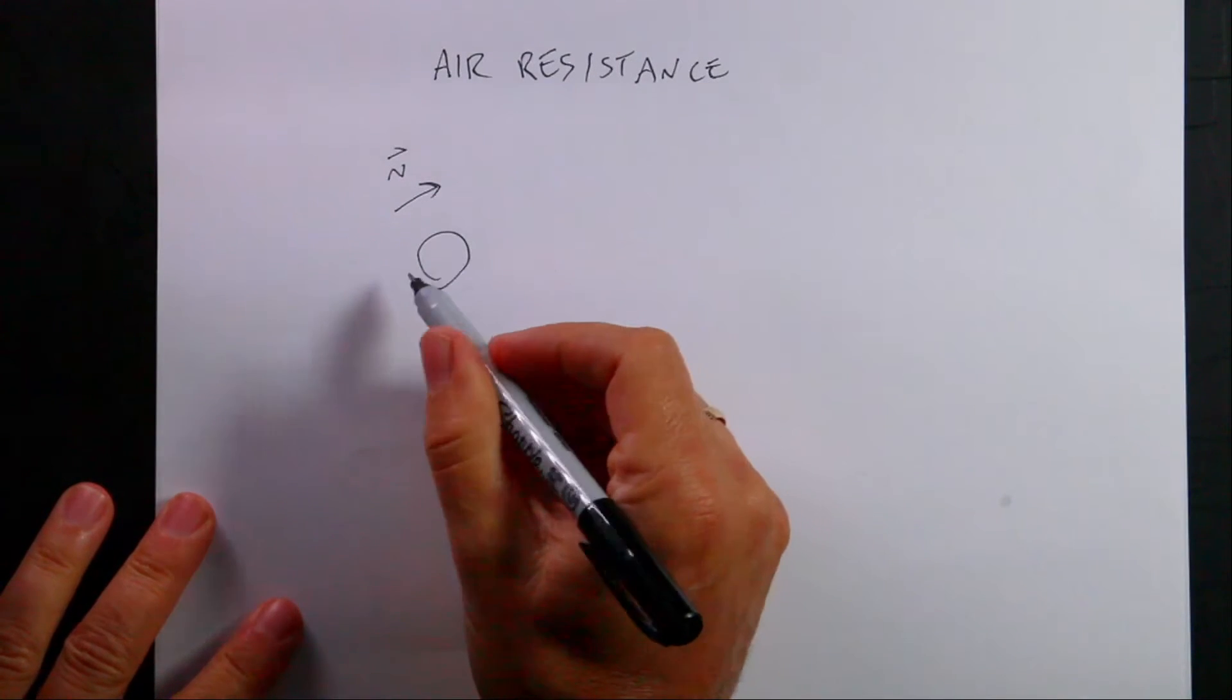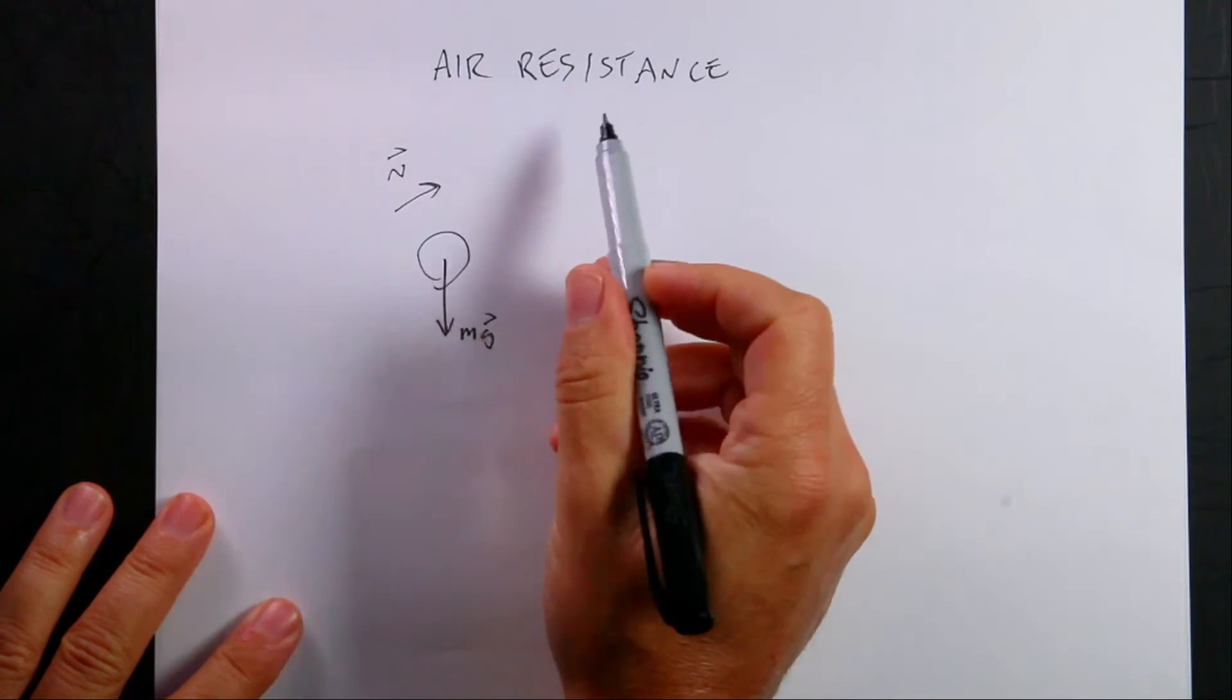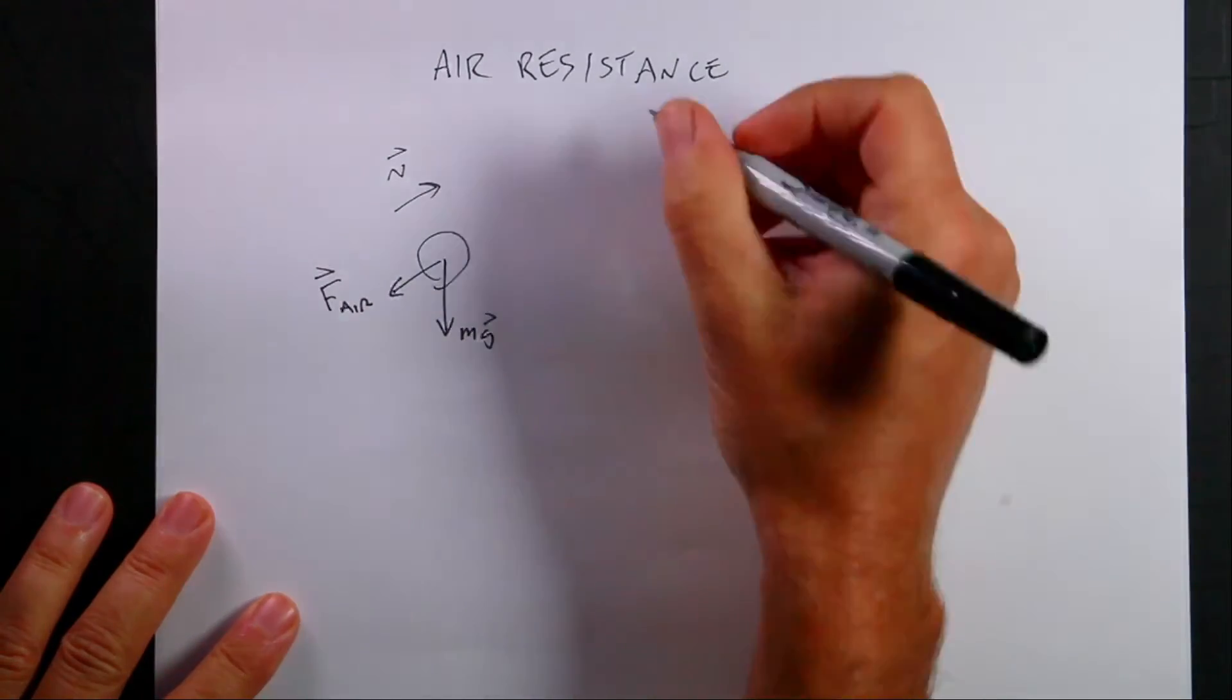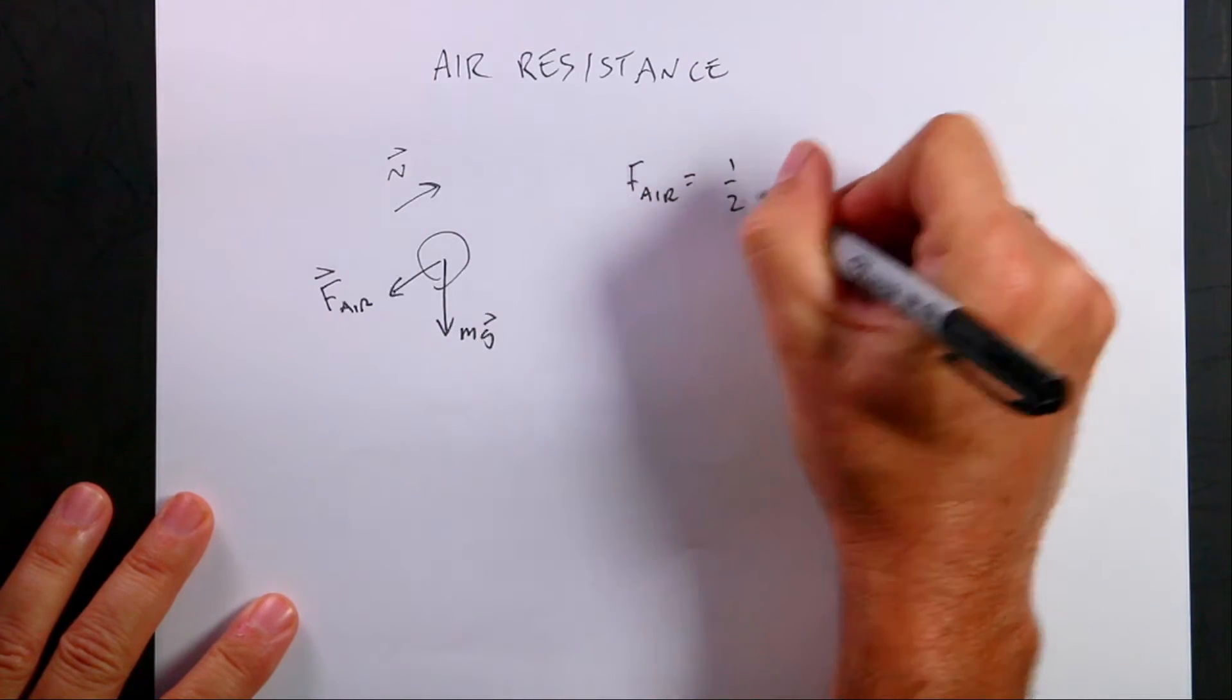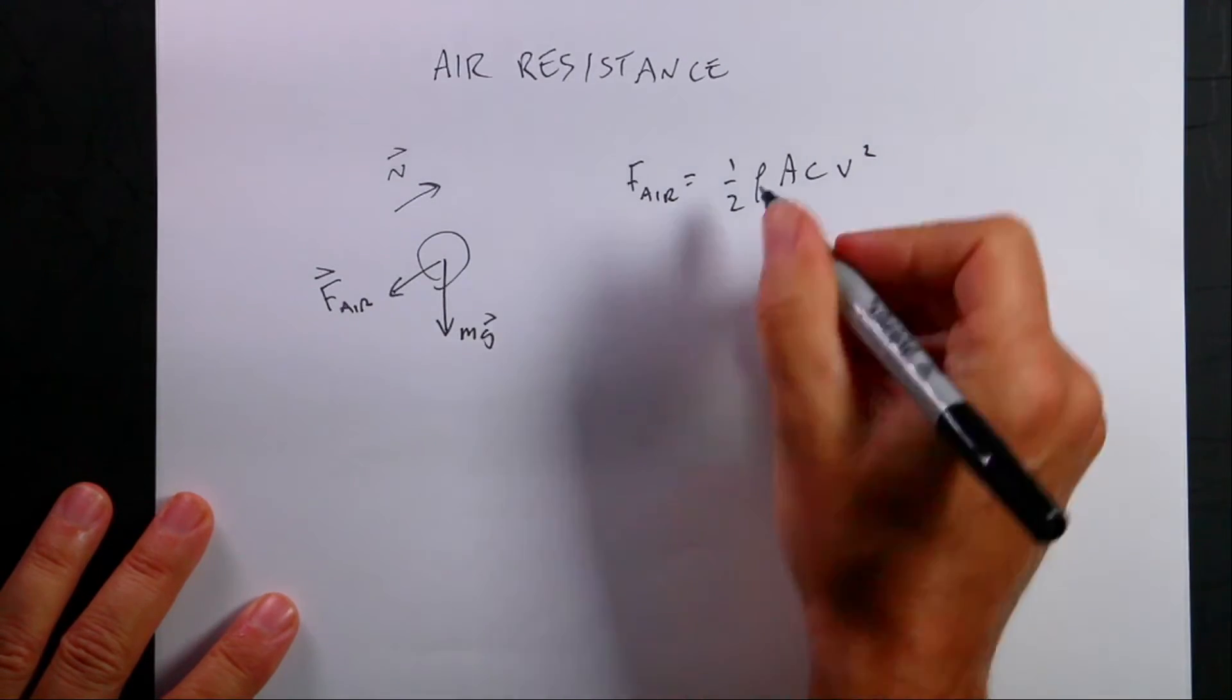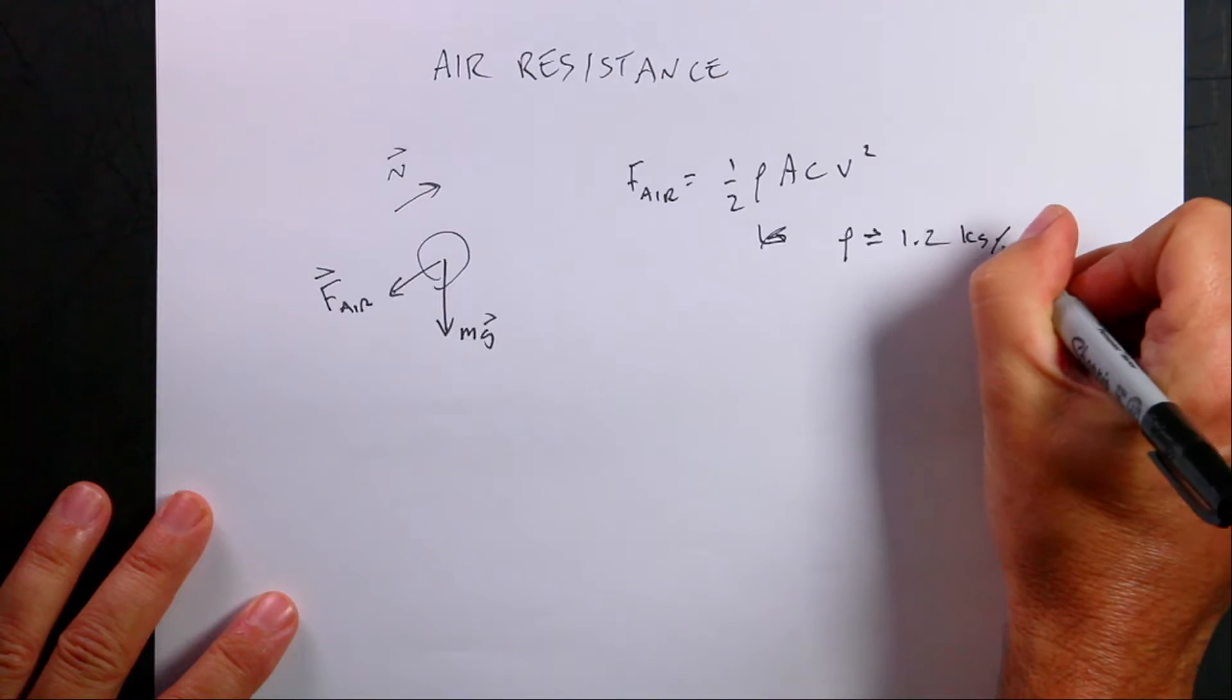So air resistance. Suppose I have this ball, throw it in the air with velocity v. I know there's the downward gravitational force mg. And if the velocity is that way, there's also this backwards-pushing air resistance force F_air. Now a lot of times people will write the air resistance force as one-half rho A C v squared. And that's fine. But this is the magnitude. So in this case, rho is the density, 1.2 kilograms per cubic meter for air.